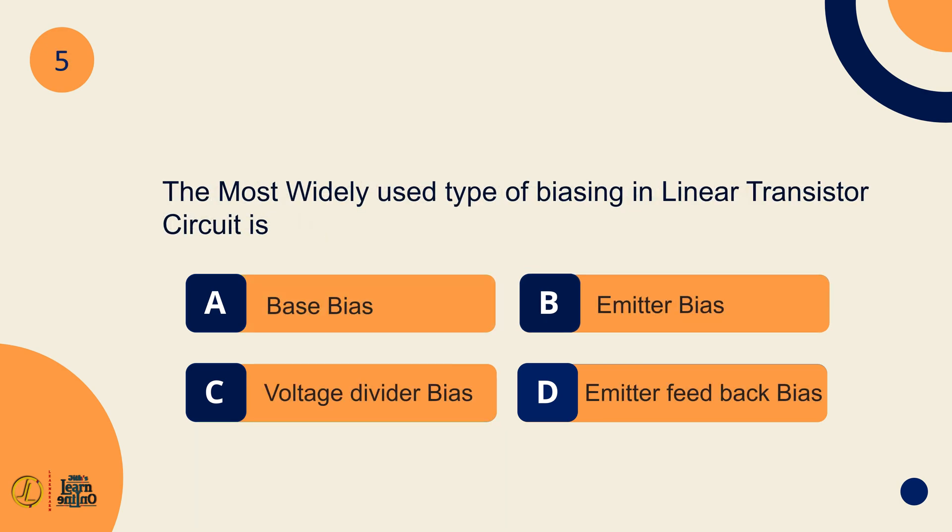The most widely used type of biasing in linear transistor circuit is voltage divider bias.